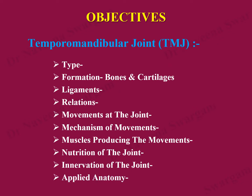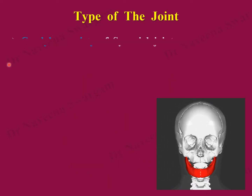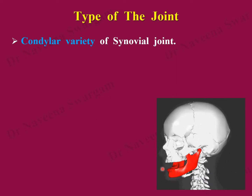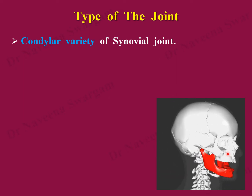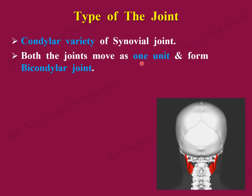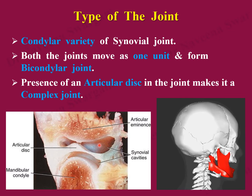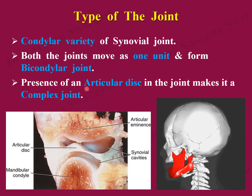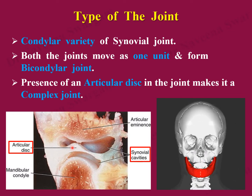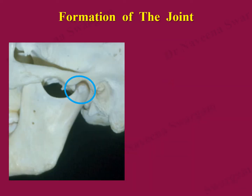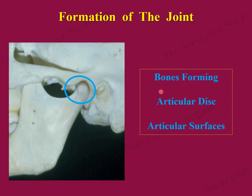First, the type of the joint. It is a condylar variety of synovial joint. During the movements of the mandible, both joints move as a single unit, which is why it is also known as a bicondylar joint. The joint is made complex with the presence of an articular disc, which divides the joint cavity into two synovial cavities.